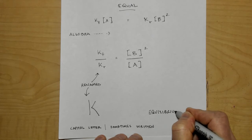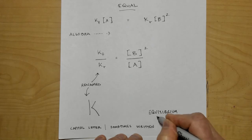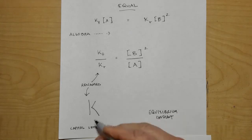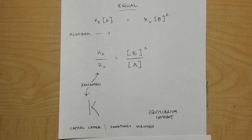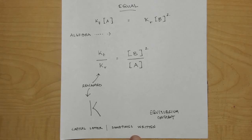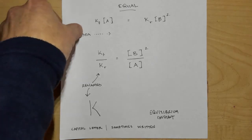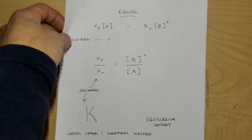Make sure you know it's a capital letter K so you don't confuse it with lowercase k. Sometimes it's written other ways. As you've been in chemistry before, you know there are about five different ways to say the same thing — well, there are at least seven different ways to write the equilibrium constant.